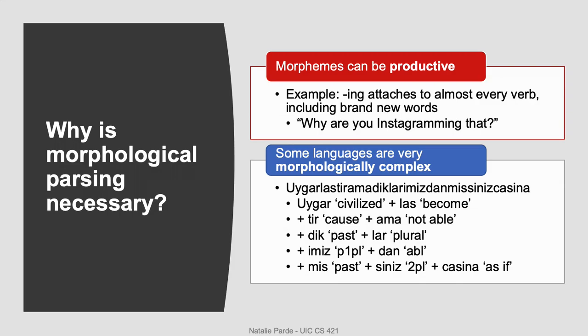You'd be able to easily recognize that I meant posting something on Instagram, but since that's a term that probably isn't present in existing corpora that would have been used to train language understanding systems, those systems probably wouldn't have built-in representations of the word. If they have morphological parsers, they would hopefully be able to break apart the word into its constituent morphemes, look up Instagram if it wasn't included in their knowledge base, and then infer that by adding '-ing' to it, you were performing the action of posting on Instagram.